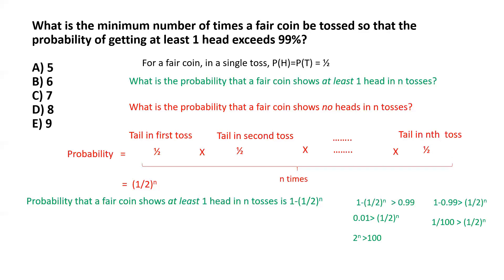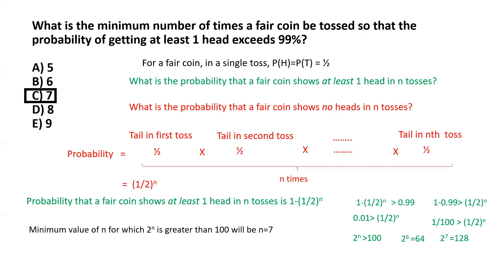So for what value of n will 2 to the power n be greater than 100? We know that 2 to the power 6 is 64, but 2 to the power 7 is 128, which is greater than 100. So the minimum value of n is 7, making the correct answer option C. The fair coin needs to be tossed a minimum of 7 times to ensure that the probability of getting at least one head exceeds 99%.